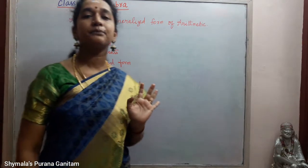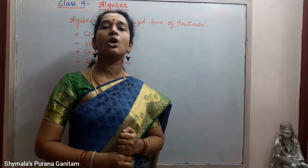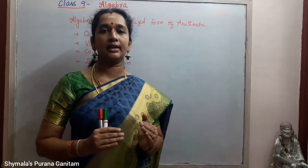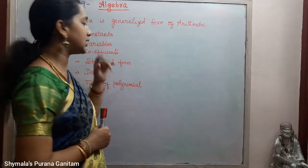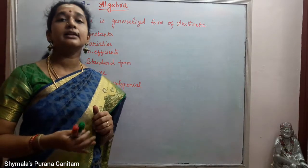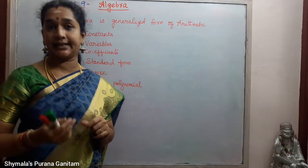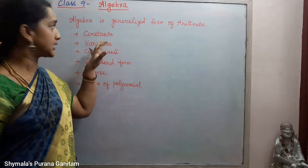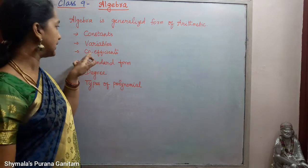First one is constants. When we say constants, all the real numbers — in general, all numbers — all real numbers are called constants. Then, next one is variables. Variables means all the letters — that is, all the alphabets are called variables. So, constants are numbers and variables are alphabets.